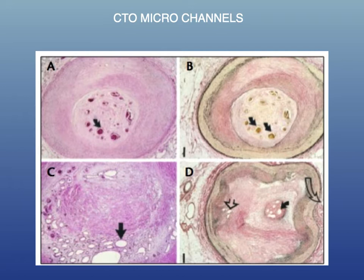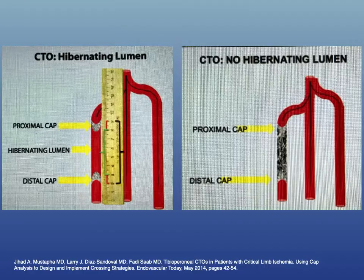If you've never seen a CTO under a microscope or cross section, this is really what it looks like. The black arrows are showing all the tiny micro channels of varying sizes. This is why some physicians make a big point of guide wire escalation — starting with 0.014, then 0.018, then 0.035 — basically trying to get into these micro channels to successfully cross the CTO.